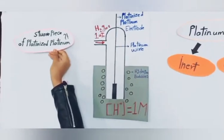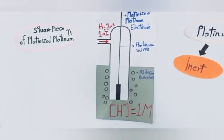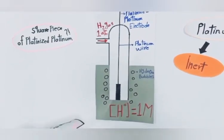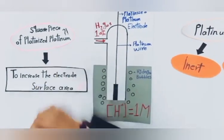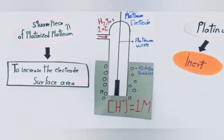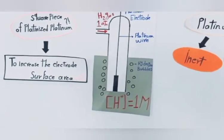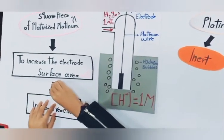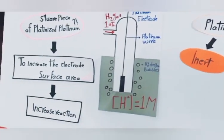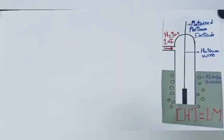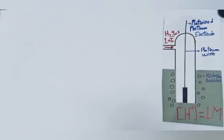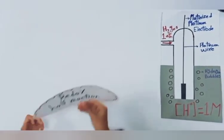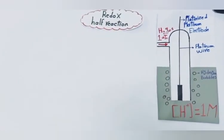We use platinum specifically because platinum is inert and acts as a catalyst. We use a square piece of platinized platinum to increase the electrode surface area, so that the reaction rate will be increased when we connect the electrode to another half-cell.